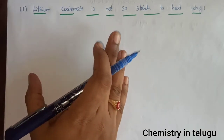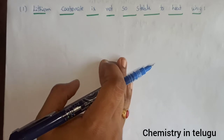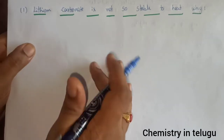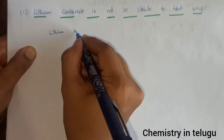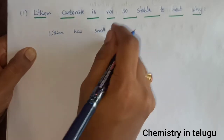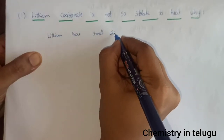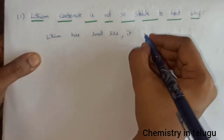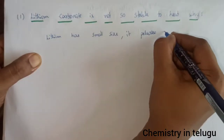Lithium carbonate is not so stable to heat. Lithium carbonate is not so stable. The main reason is that lithium has small size, so it polarizes the carbonate ion.